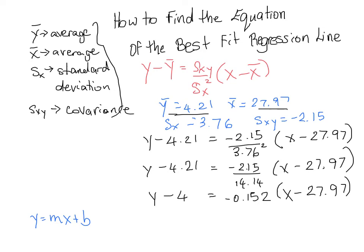For our third step, we distribute that negative 0.152. We get negative 0.152x plus — because negative times negative gives positive — approximately 4.25. The left side remains y minus 4.21.